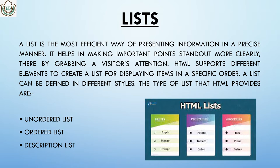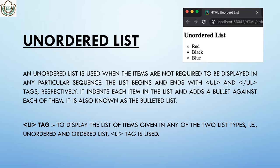First is the unordered list. An unordered list is used when the items are not required to be displayed in any particular sequence. The list begins with the ul tag and ends with the slash ul tag. UL stands for unordered list. It is a container tag — it contains items and adds a bullet against each of them, using circles or discs. That is why it is also known as a bulleted list.